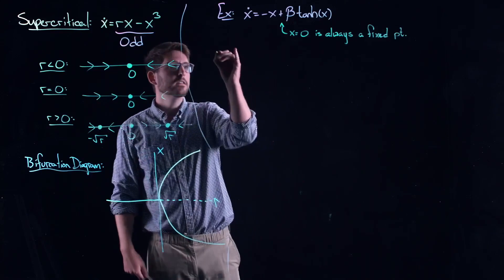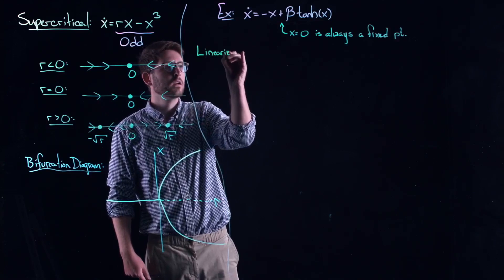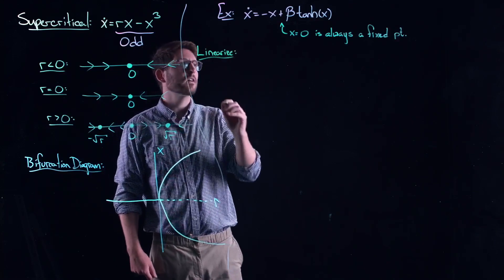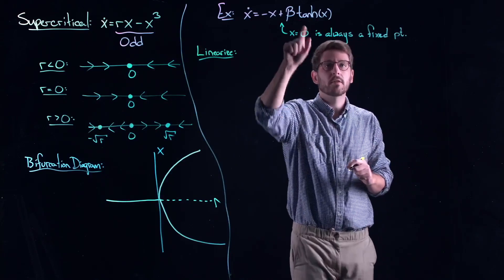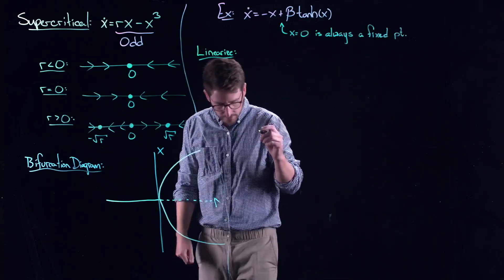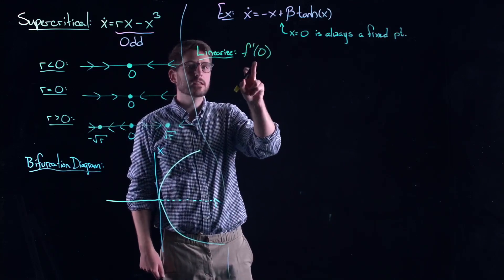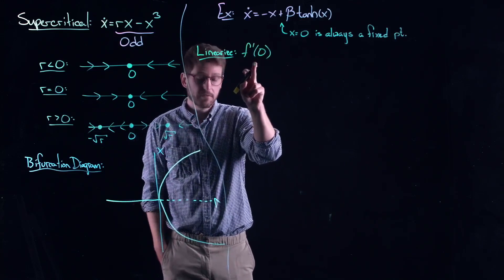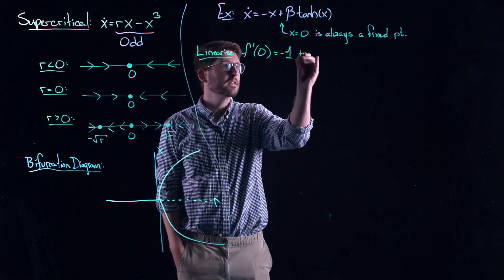So, let's linearize. Let's linearize around this fixed point. Remember, linearizing means taking the derivative of the right-hand side and evaluating it at zero. So, that's f prime of zero. We did this to determine the stability of a fixed point.